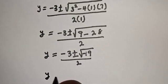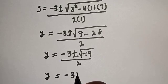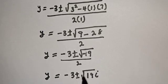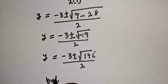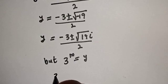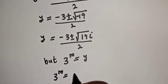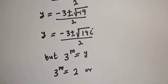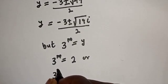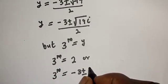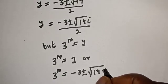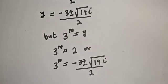Therefore y equals minus 3 plus or minus square root of 19i, over 2, where i is the imaginary unit.